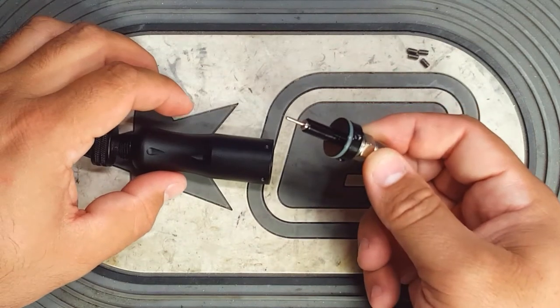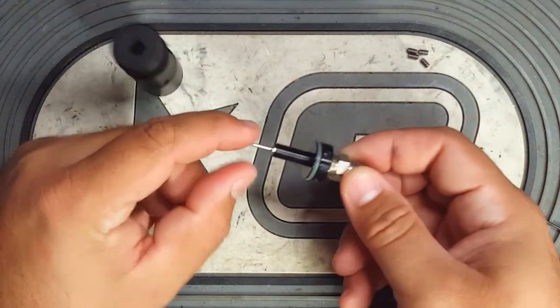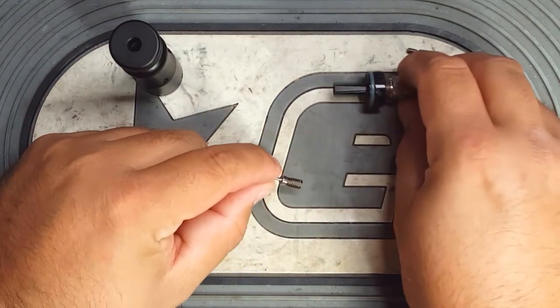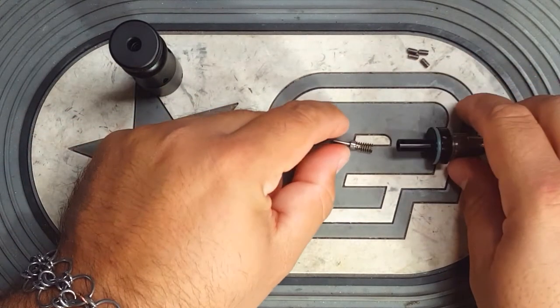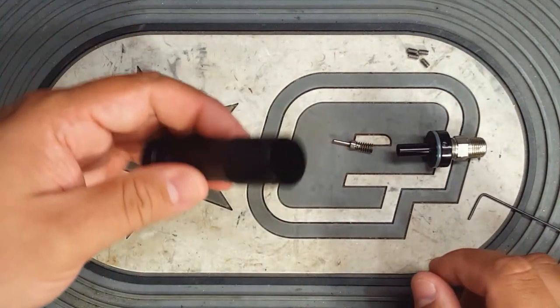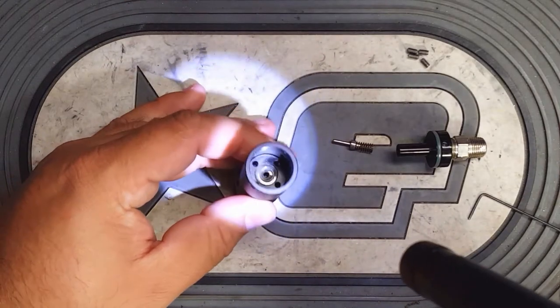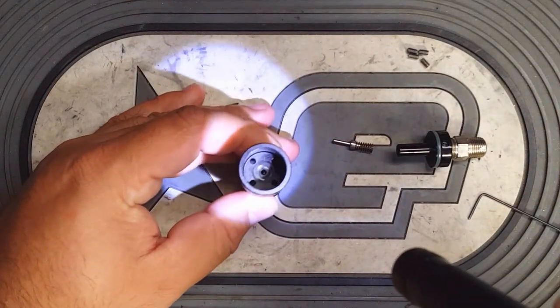It'll slide out and you'll have the reg pin and spring inside this housing, and an O-ring on here. Inside the regulator body, you can see the reg seat there on the bottom.